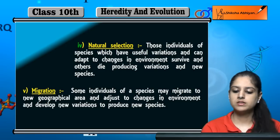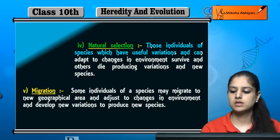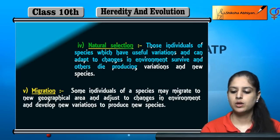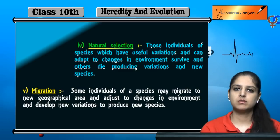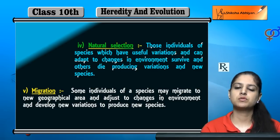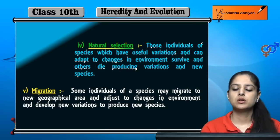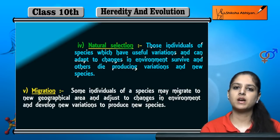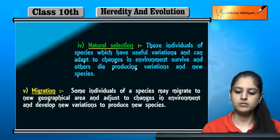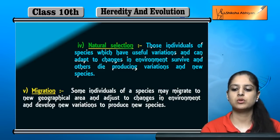Another factor is natural selection. Individuals of a species which have useful variations and can adapt to changes in the environment survive, while others die, producing new variations and new species. Because our environment is changing, some variations are useful for survival. This is called natural selection — nature selects those variations and organisms that are better adapted.